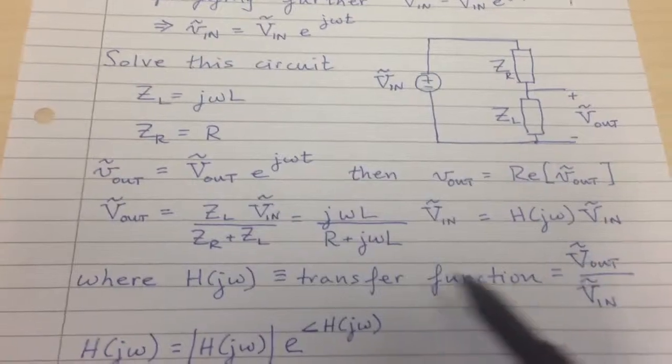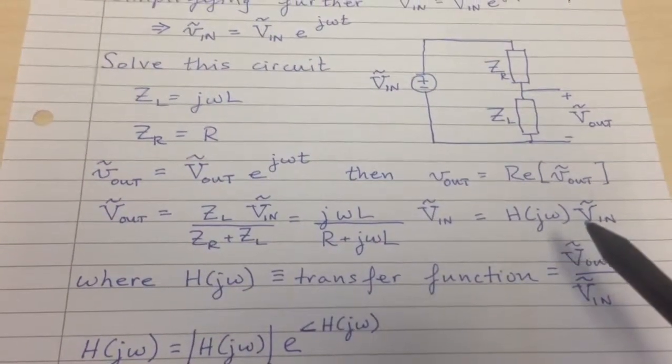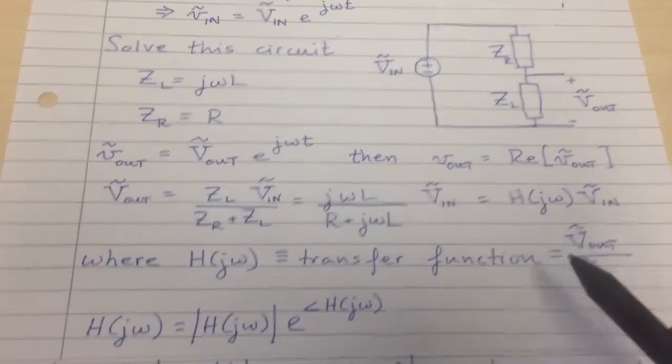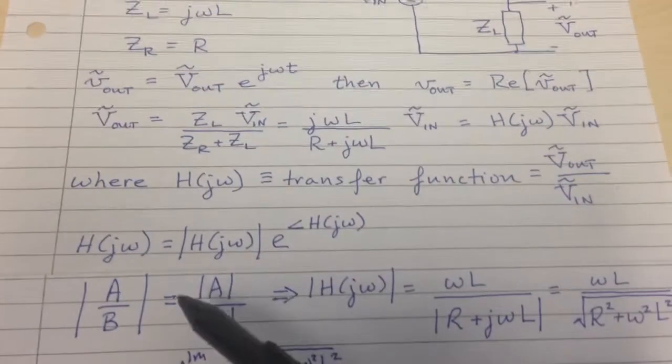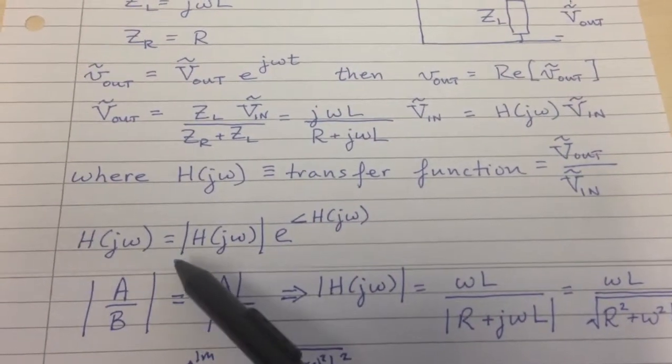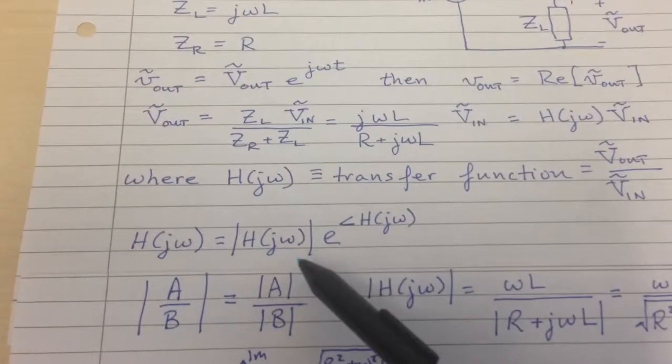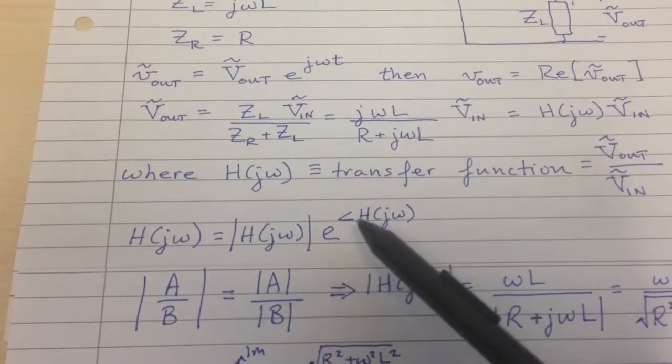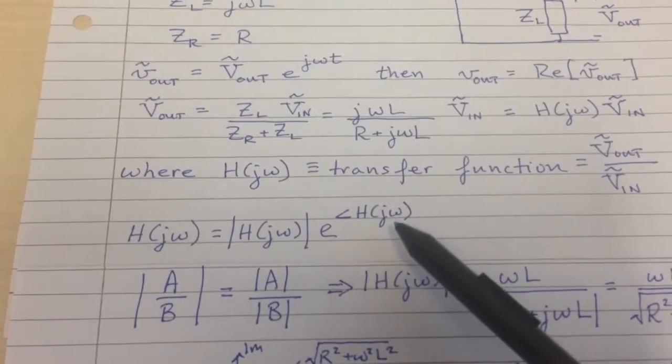So the transfer function is equal to the ratio of V_out divided by V_in, that's another way of looking at that. And the transfer function will, in general, be complex. So we can write it as this complex function, |H(jω)| times e^(j arg(H(jω))).